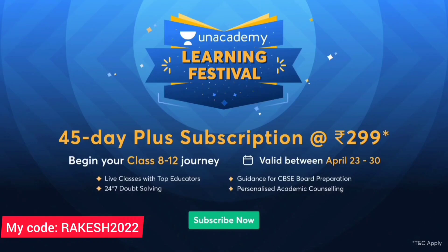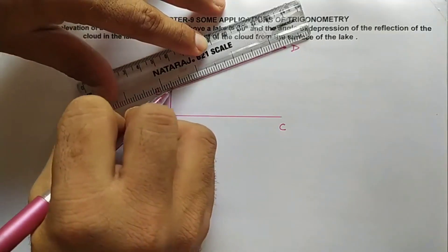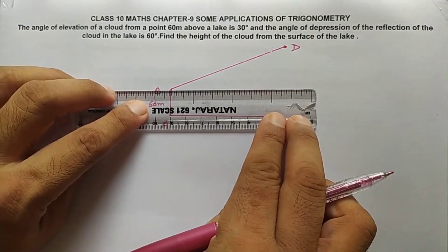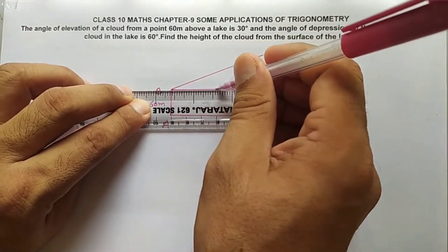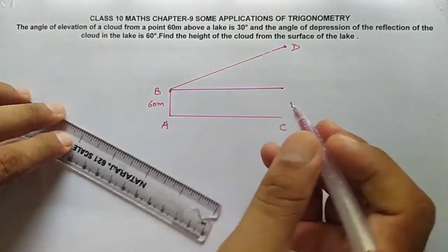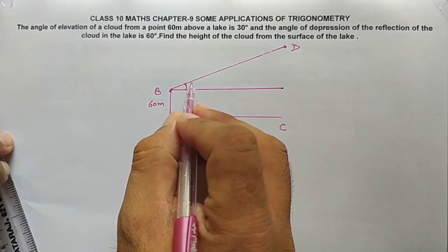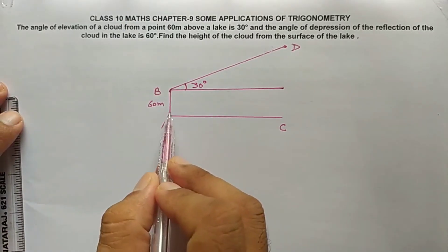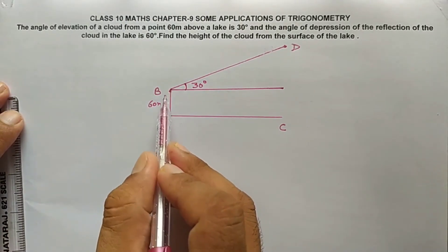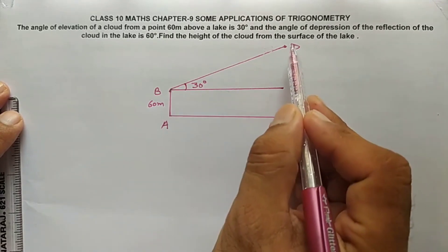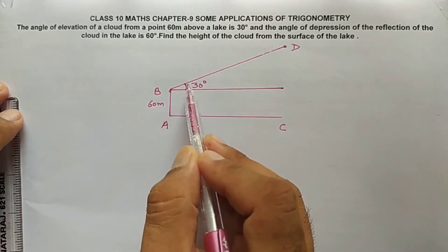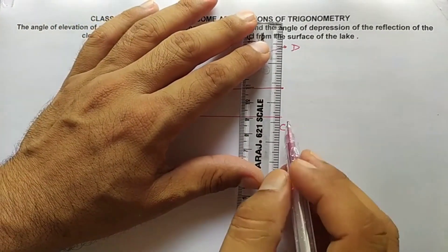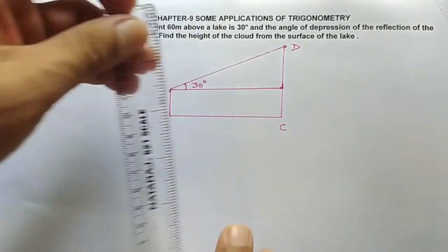This is the horizontal line at the eye of the observer. This angle is given as 30 degrees. Point B is 60 meters above the lake. The angle of elevation of the cloud from B is 30 degrees. We join the points to form the diagram.